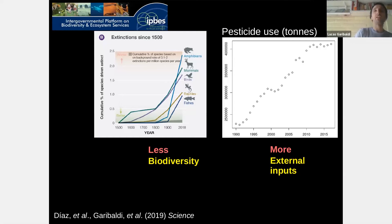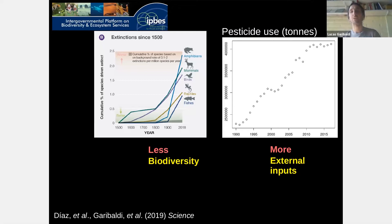However, as humanity we are doing exactly the opposite. The graph on the left shows that year after year we are having less biodiversity — many species from any group are going extinct. The graph on the right shows that year after year we are using more external inputs, exemplified with the use of pesticides. From science we say it's possible to produce with more biodiversity and less external inputs, but in practice we are doing exactly the opposite.